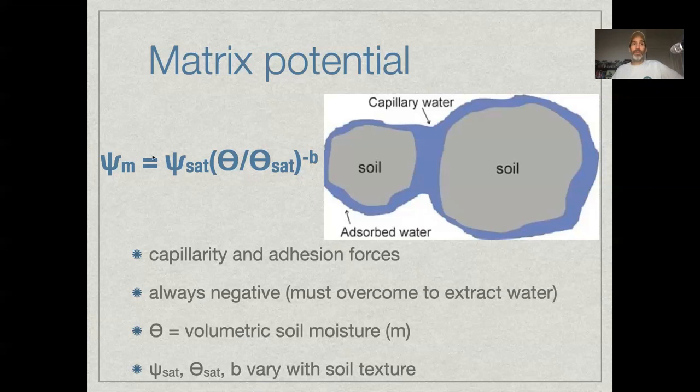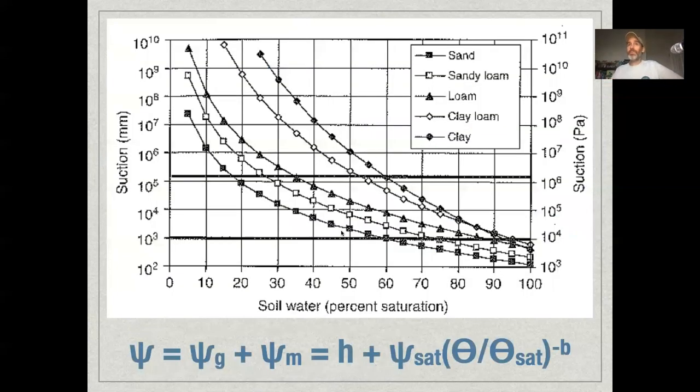this θ_sat, ψ_sat, and b are all going to vary with soil texture as well. So to explain that, we can just look at what these graphs look like. So if we come here to 100%, that's saturation,